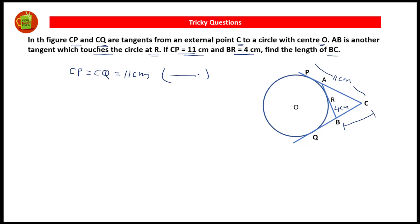Similarly, BR is equal to BQ because these two tangents are drawn from the exterior point B, so the lengths of these two tangents will also be equal. BR is 4 centimeters, therefore BQ will also be 4 centimeters.